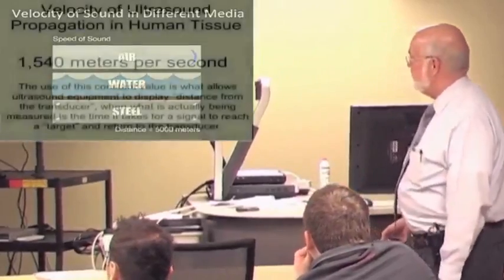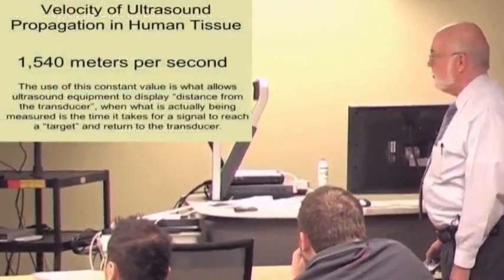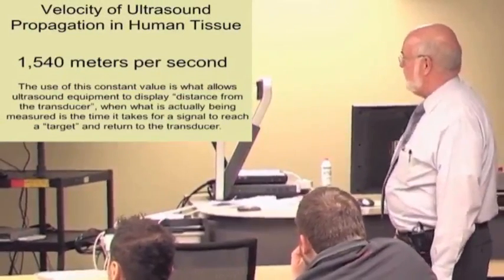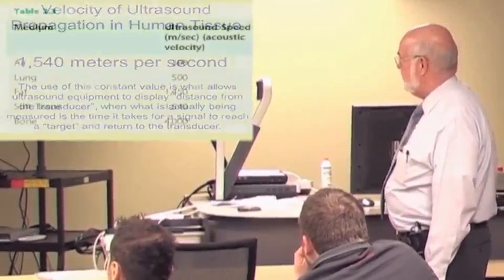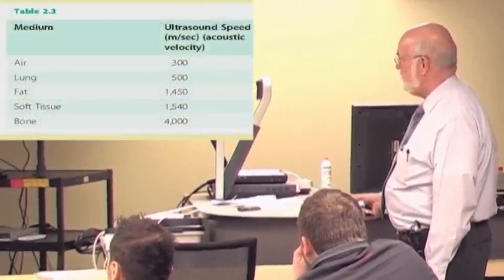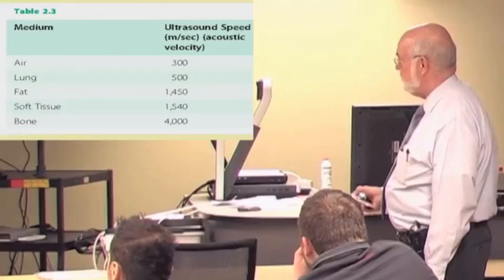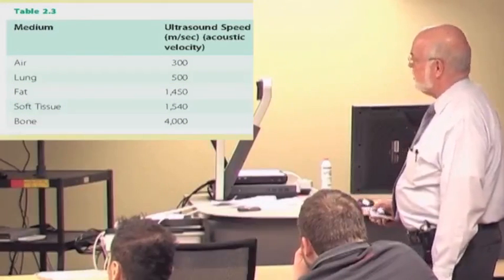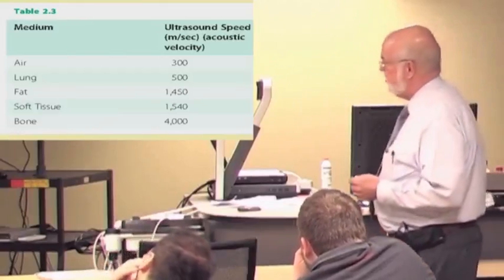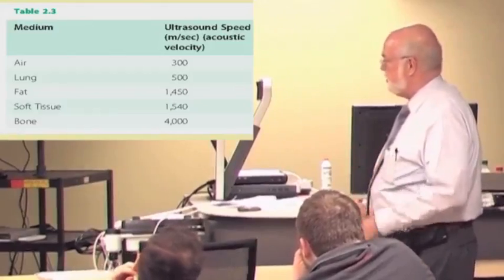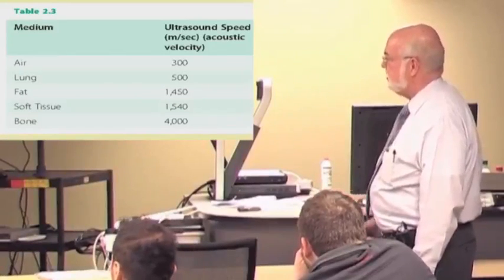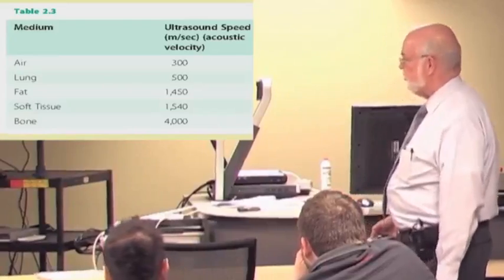Well, we're taking this as kind of our rule of thumb. This is what the equipment has to assume, but that's simply not the case in many cases. And here's an example. Fat tissue, instead of 1,540, it's actually 1,450 meters per second. Bone, way up there at 4,000 meters per second. And that introduces distortion into the tissue because the ultrasound machine is going to say that everything you look at has this velocity in tissue, and it's simply not true.